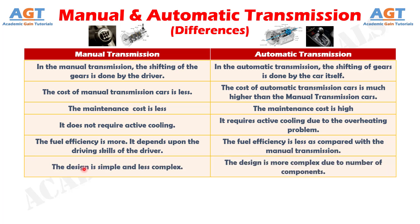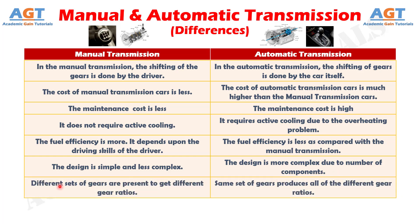Number 6. The design is simple and less complex in manual transmission, whereas the design is more complex due to the number of components in automatic transmission. Number 7. In manual transmission, different sets of gears are present to get different gear ratios, whereas the same set of gears produces all of the different gear ratios in automatic transmission.